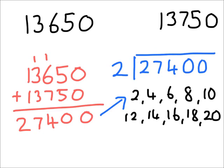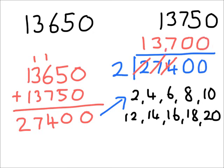How many twos are in two? There is one — one times two is two. How many twos are in seven? Three twos are six, so I've got one left over from my seven. How many twos are in fourteen? Seven twos are exactly fourteen, with none left over. How many twos are in zero? None. How many twos are in zero? None. So there's our halfway value — our number exactly in the middle: thirteen thousand seven hundred.